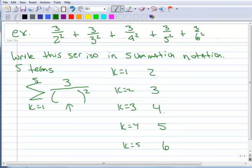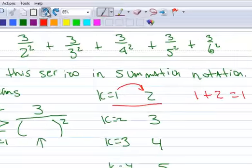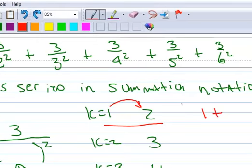And then you look at this and say, how can I go from k equals one to the two? Well, if k equals one, then that could be k plus one. So one plus one is two, that gave me two.